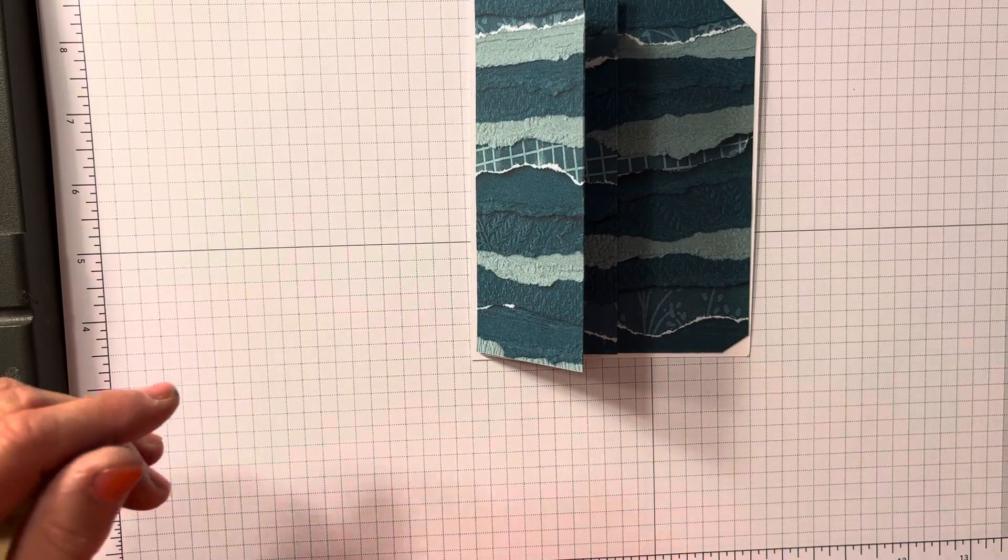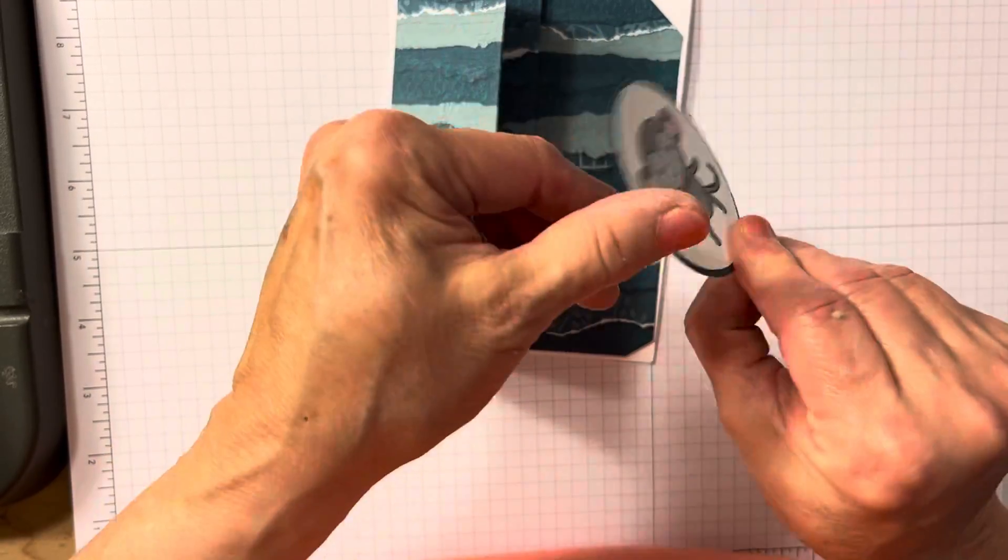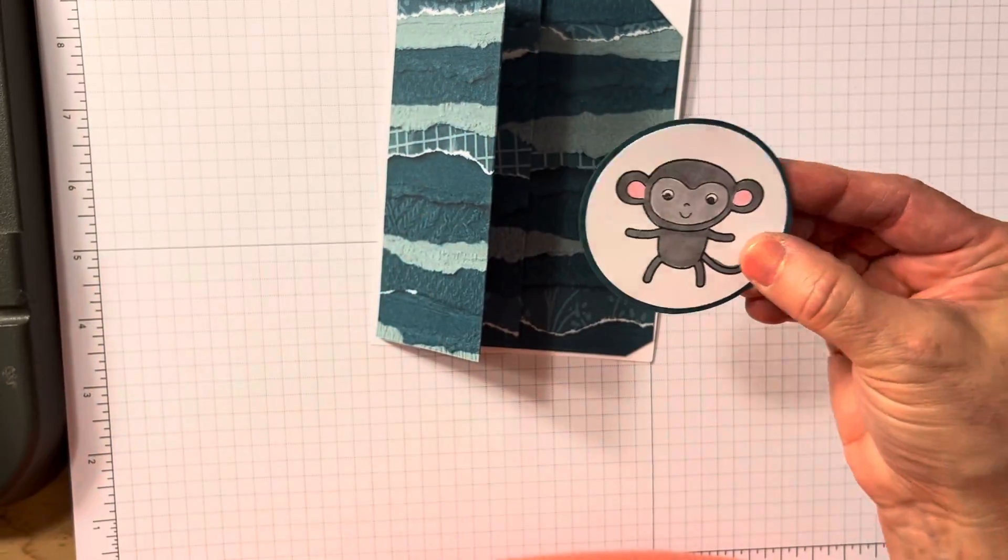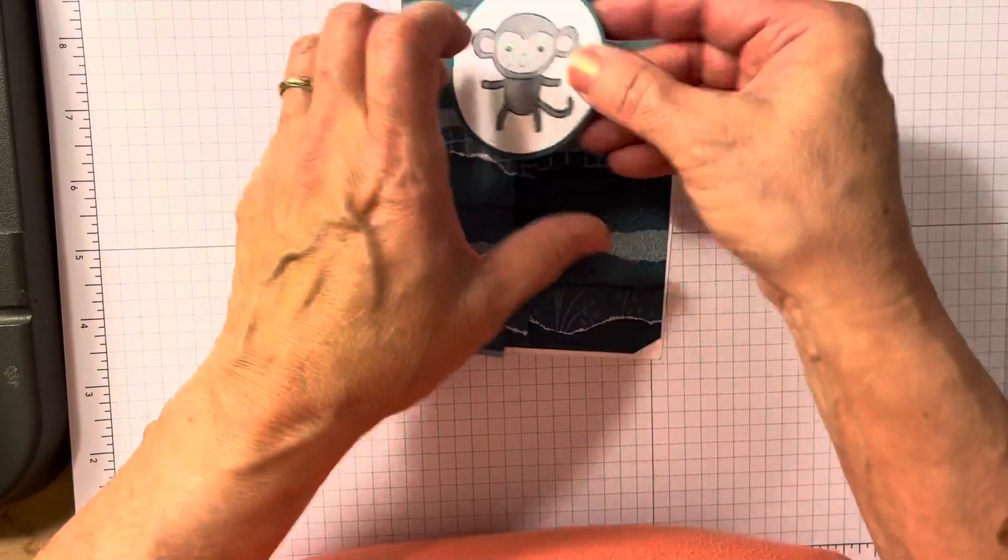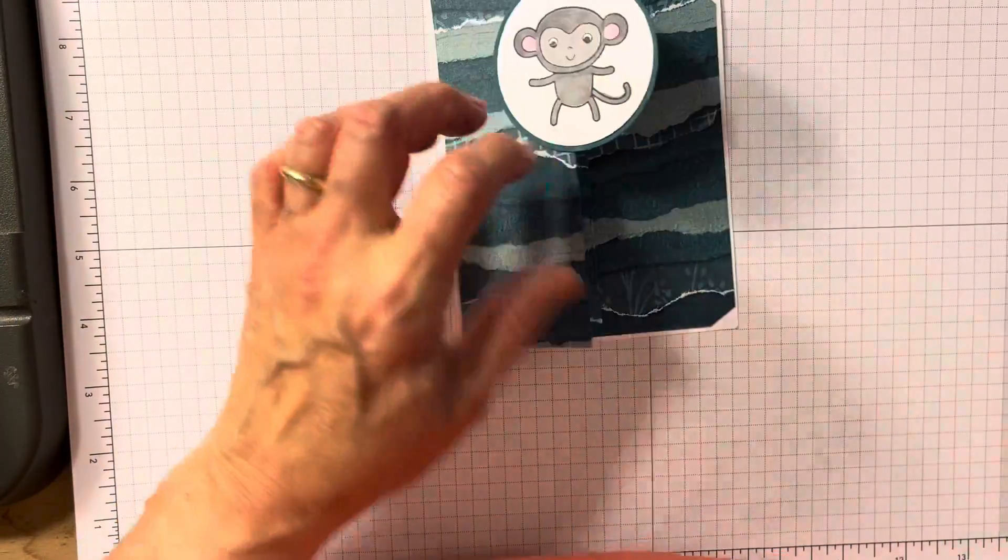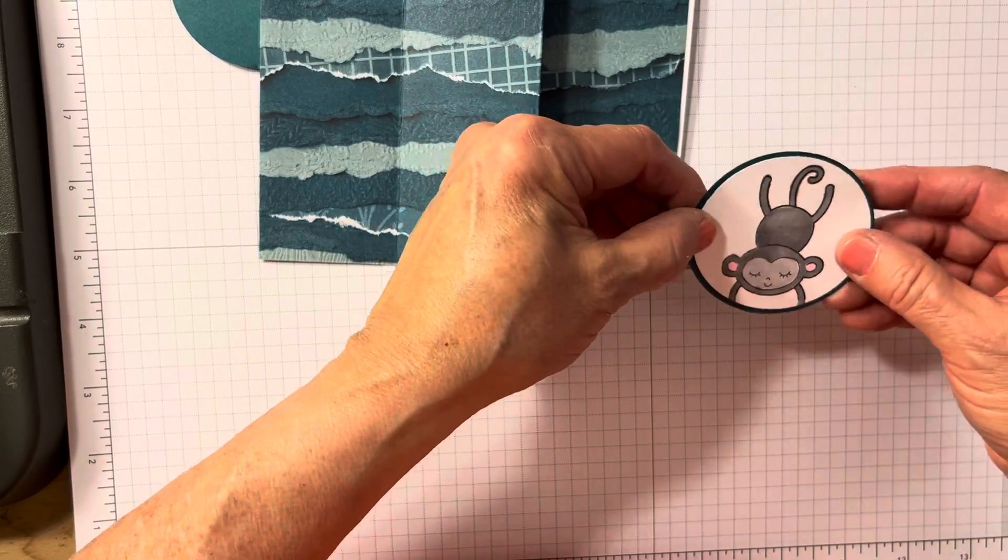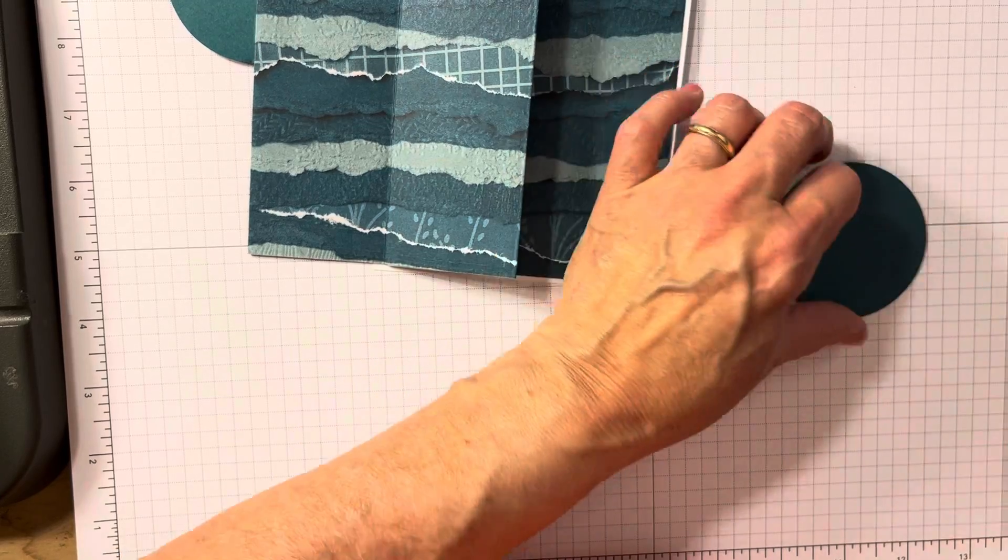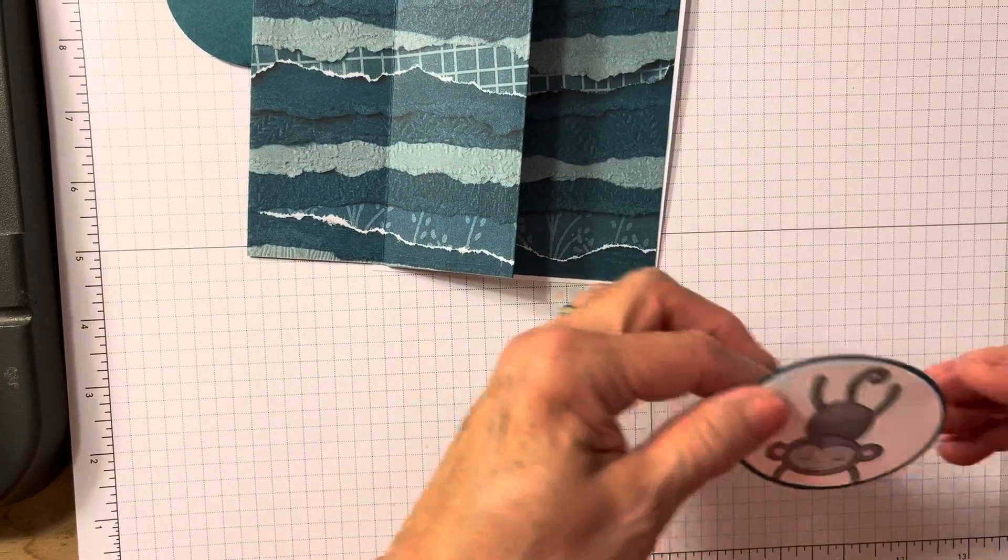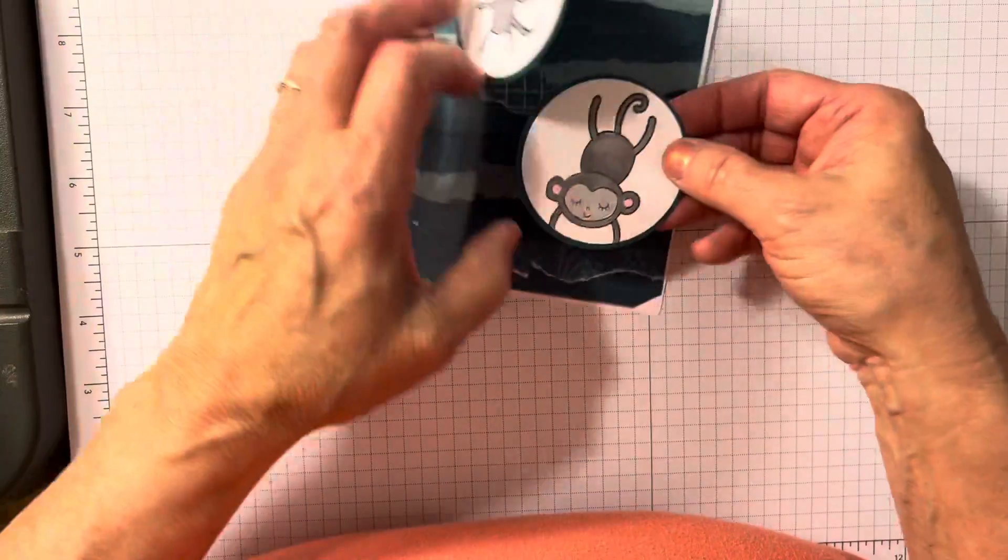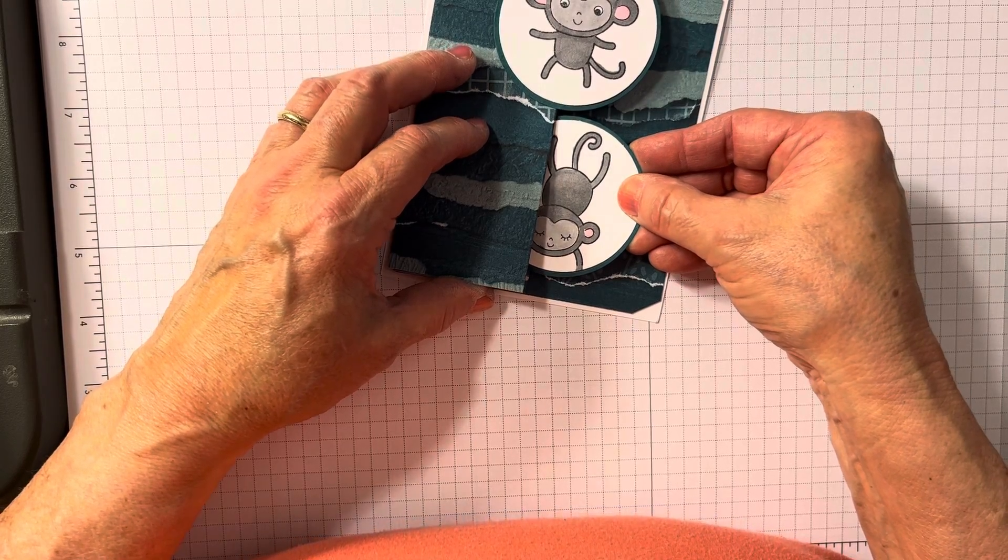Then I'm going to take my little monkey and I'm going to put some adhesive on the left-hand side. And I'm going to put it on the top flap. I'm going to make sure there's no adhesive sticky there. Then I'm going to open it up. And on my next one, I'm going to put some adhesive. You don't want to put it all over the circle or you'll close your card. Then I'm going to kind of line this guy up. Maybe down there so you can see him a little bit.